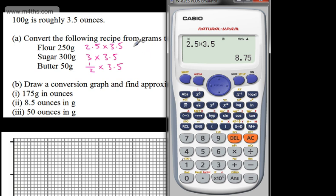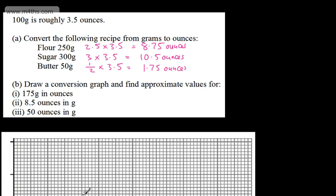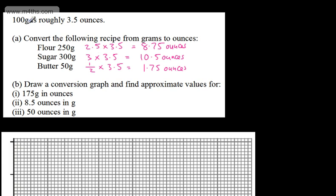Another approach is to write a 1-to-N ratio. For 300 grams, 3 × 3.5 gives 10.5 ounces. For 50 grams, 0.5 × 3.5 gives 1.75 ounces. So on the calculator, 0.5 multiplied by 3.5 gives us 1.75. All I've done is looked at scaling it up by the appropriate multiplier.